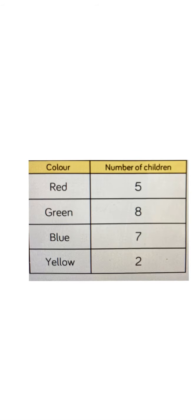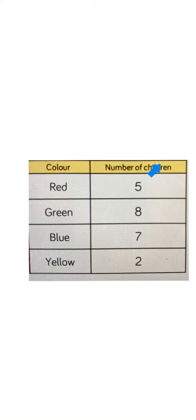This is the type of table that I'm talking about. A table has headings and it tells you information. Here, the heading is 'colour' and it lists the colours we are going to be looking at, then it tells you the number of children and how many children like each colour.